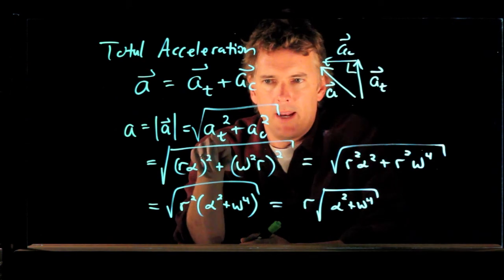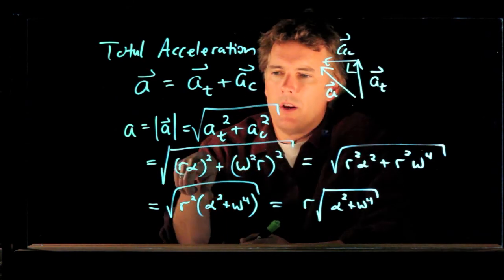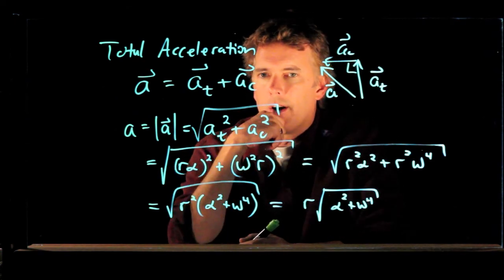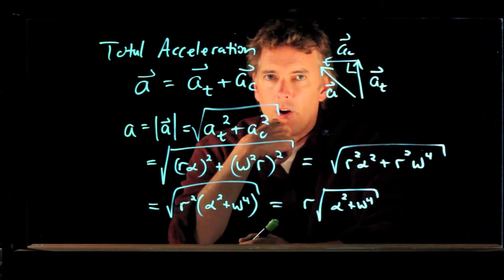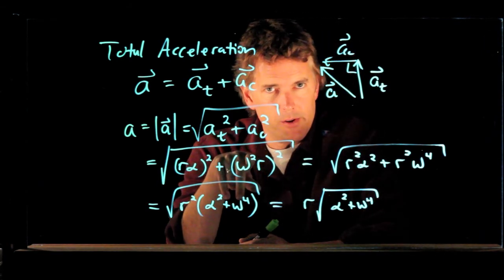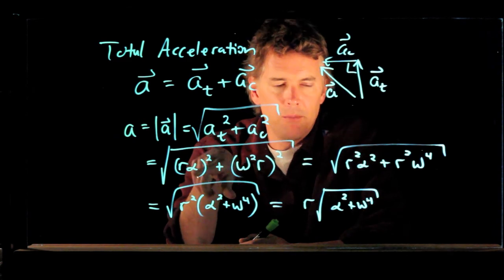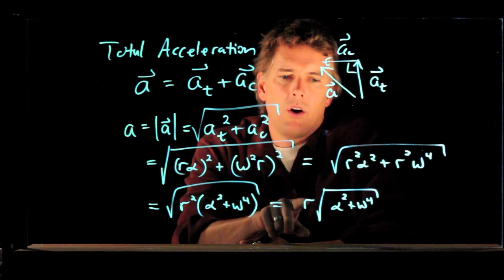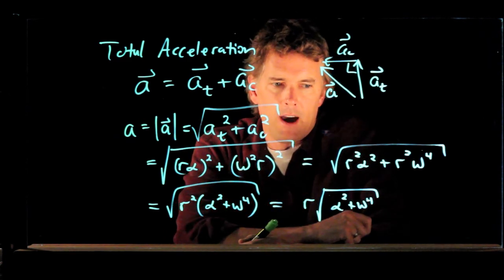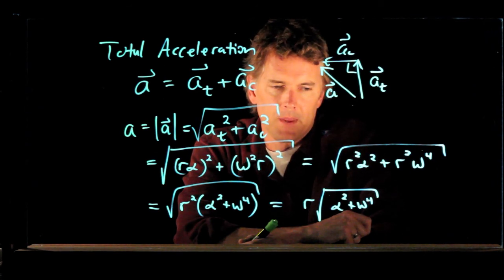But we know a little bit about a t and a c. We know that a t is equal to r alpha. A c is equal to omega squared times r. And if you plug those into your equation, you can in fact simplify to r times the square root of alpha squared plus omega to the fourth. Okay.